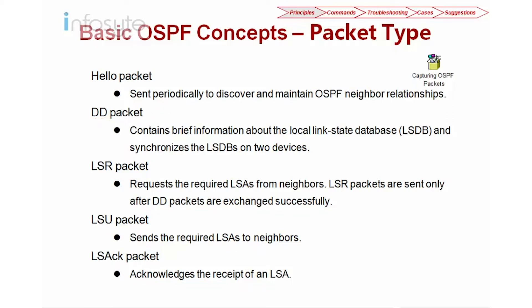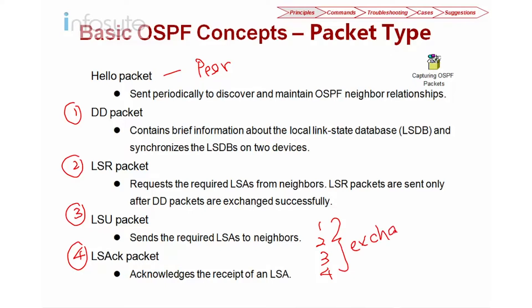After reviewing the packet types, remember that in OSPF there are two different types of relationships. The first is forming the Peering, and the second is forming the Adjacency to exchange the LSA. So in OSPF, they have two different relationships: Peering and Adjacency.